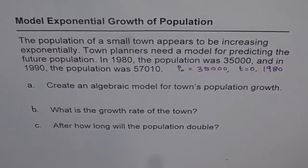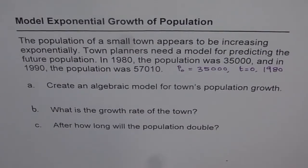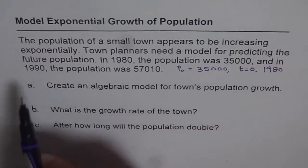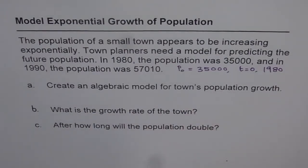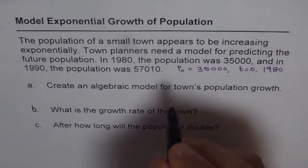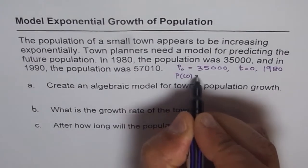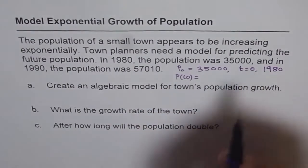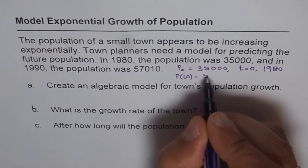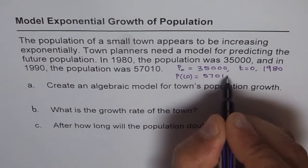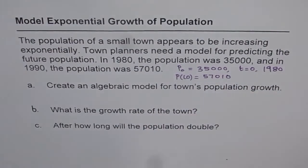So as the time goes by, in 1990 t will be 10. 1990 minus 1980, that is how it is going to be. Now we are given population 1990 to be equal to 57,010. So we will call this population as P10. Population after 10 years is 57,010. So we are given these values.